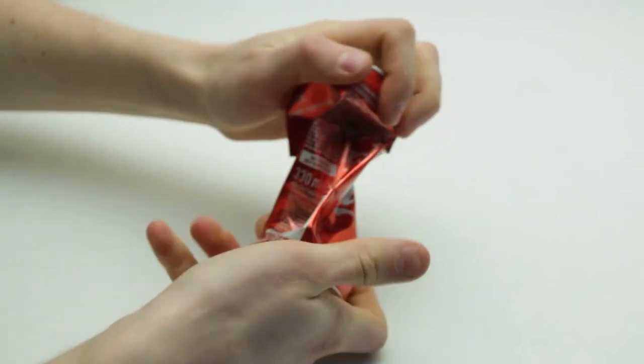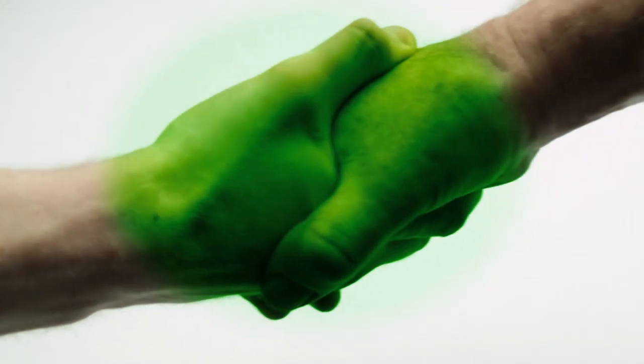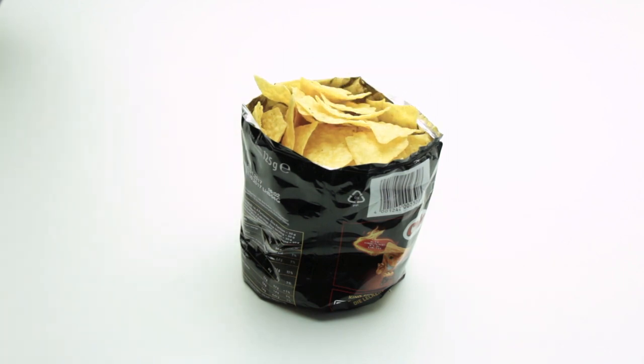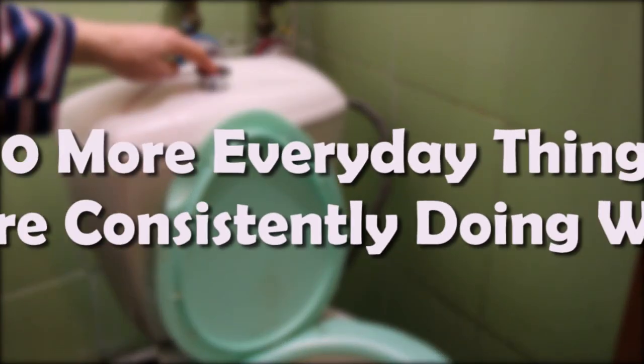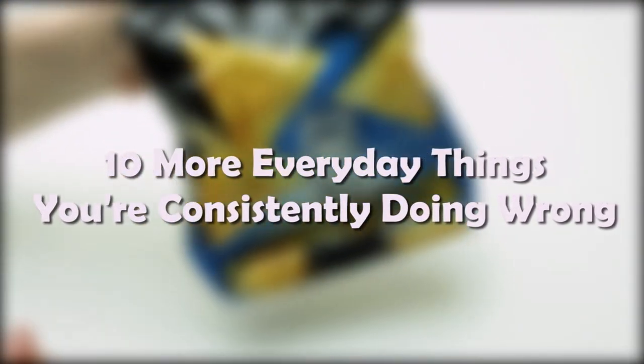Humans have been around for a very long time, and in that time, we've developed distinct ways to go about doing everyday tasks that have become universal to us all. Here are some things that you've been insistently doing wrong your whole life.